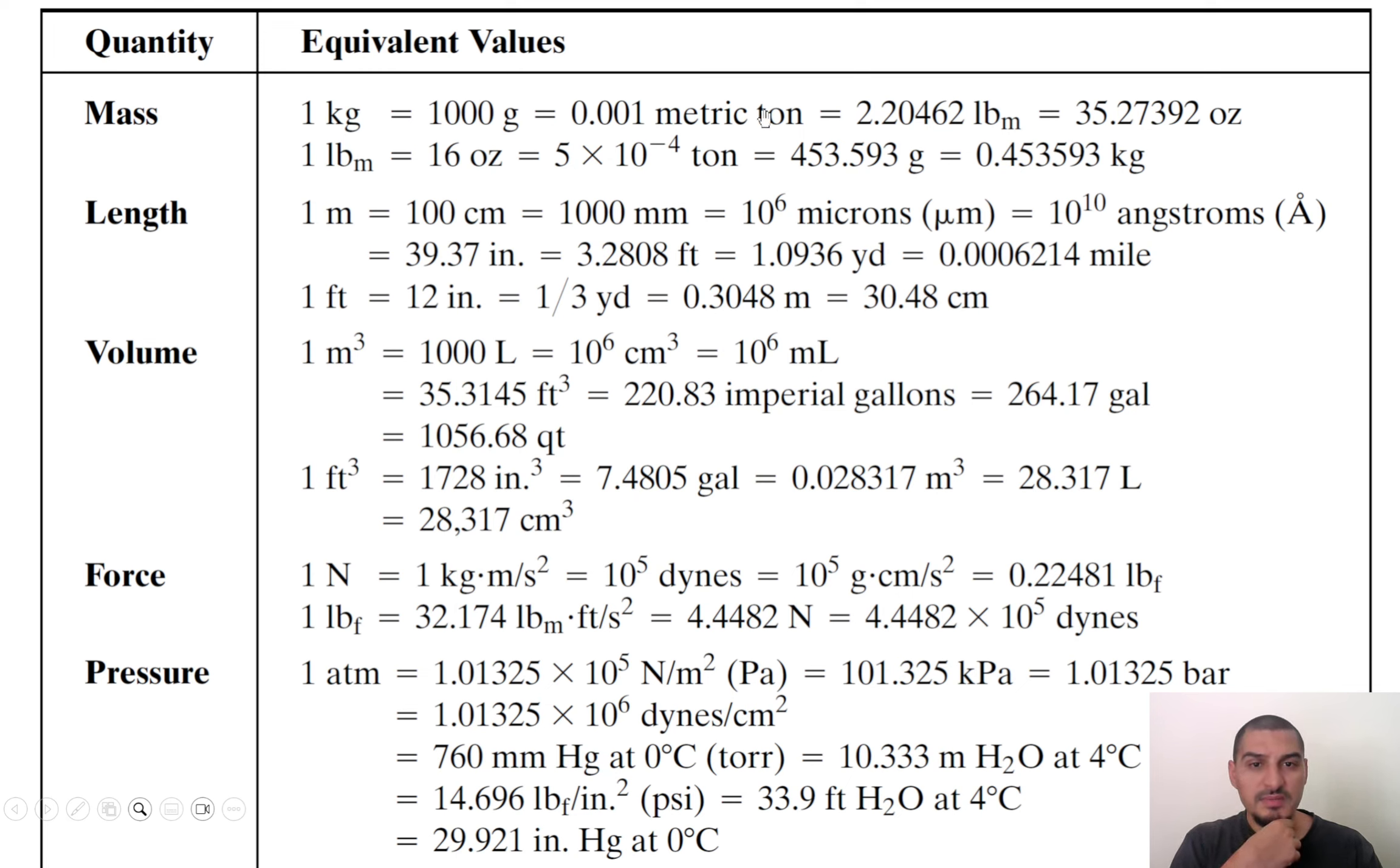so first we start with mass, we have kilogram to gram to ton, to pound mass, to ounces, and starting with one pound to the rest of the units.